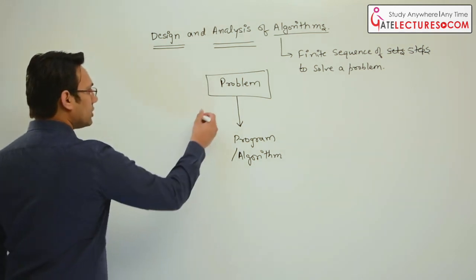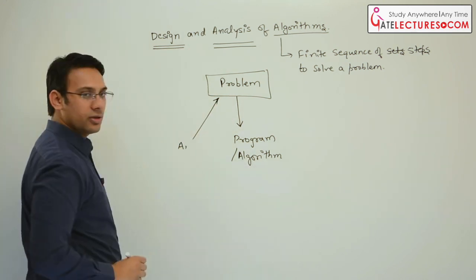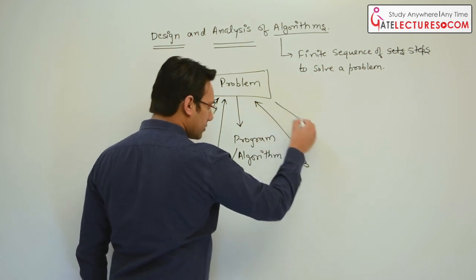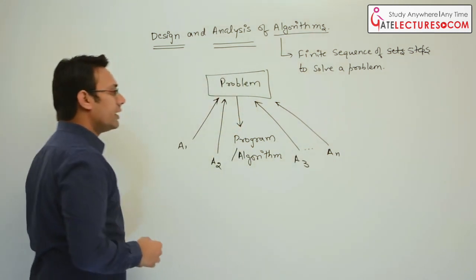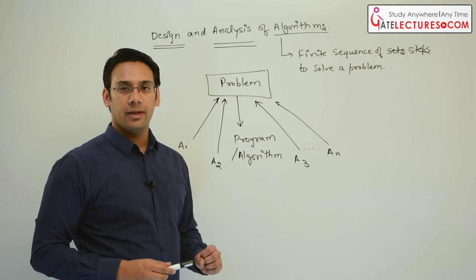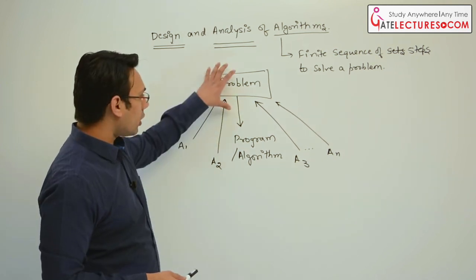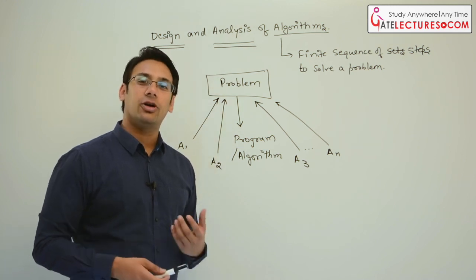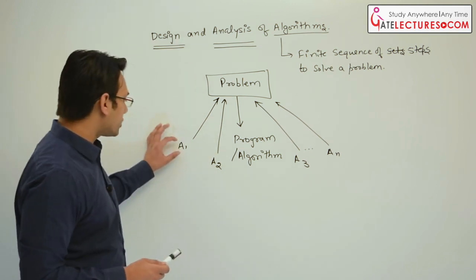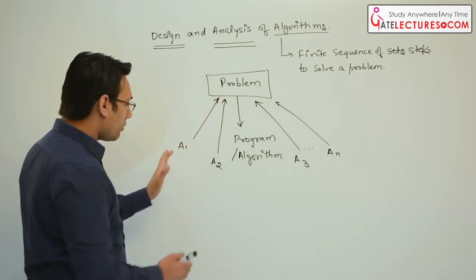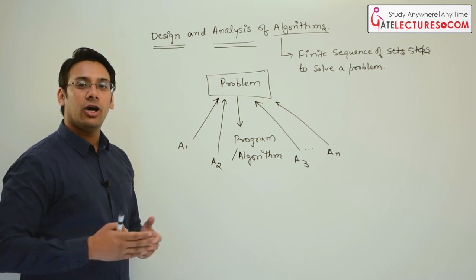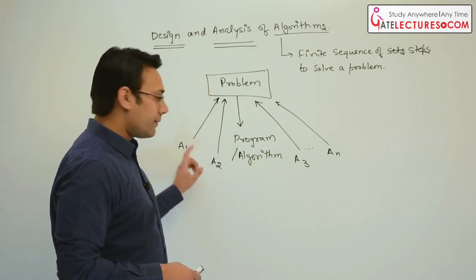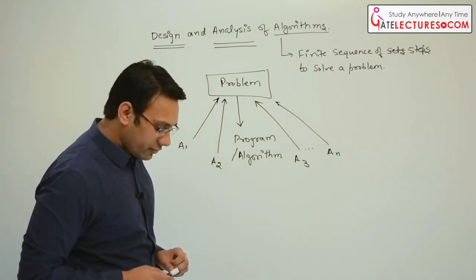The question arises: if you have several algorithms to solve a problem, which algorithm is better compared to the others? Out of algorithms A1 and A2, which one solves the problem more effectively? We may have different criteria to analyze these algorithms. For example, let's create a program to find the factorial of a number — you can write many different programs to find it.